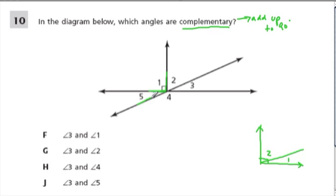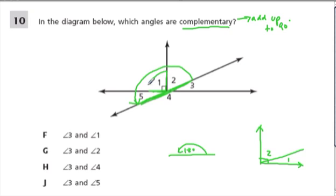Here we're going to look at this line to help us see what's going on. You have to remember that in a line, the angle measure is 180 degrees. So here, the angle measure from here all the way here is 180 degrees. We already know that angle 1 is 90 of that, so what's left over? 180 degrees minus 90 gives us 90 degrees. So 5 and 2 have to add up to 90, and those two are complementary.